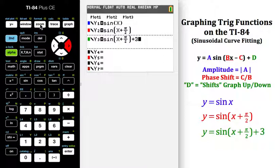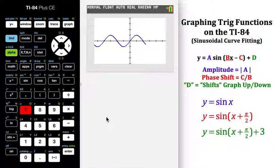I should not have to hit zoom 7 for zoom trig again but just to be safe let's do it. The original graph comes up, the red graph which has been shifted to the left pi over 2, and now the last graph has been shifted to the left pi over 2 but also up 3.